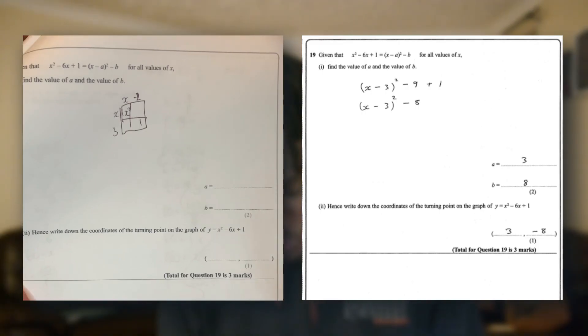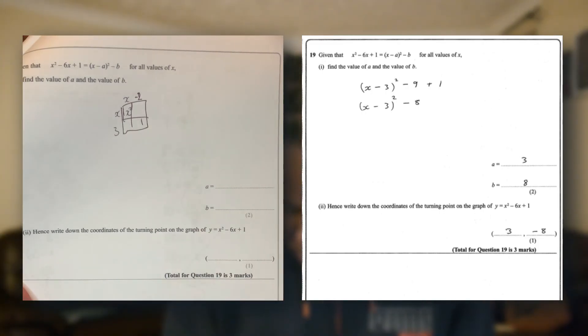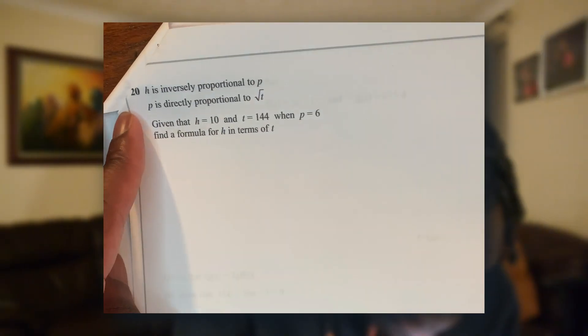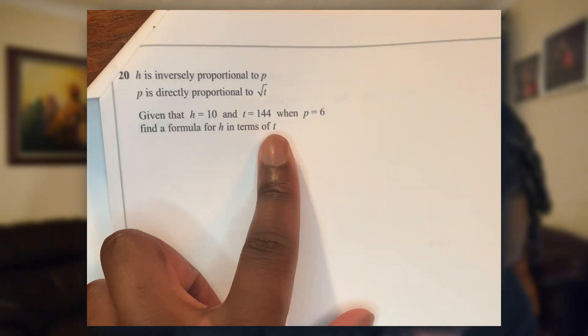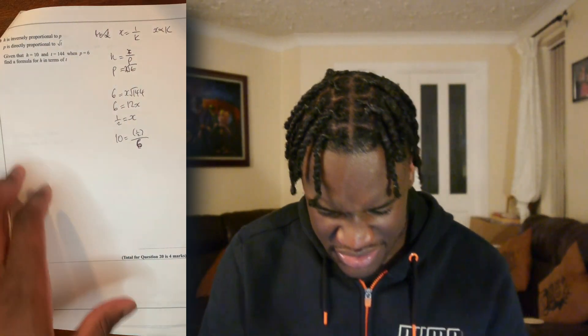This one — god help this one. I didn't even attempt either of them. Pink is inversely proportional to p — what does inversely proportional mean again? You know when they give you a lot of space, that means you're in trouble, because there's going to be a lot of working out. What am I doing?